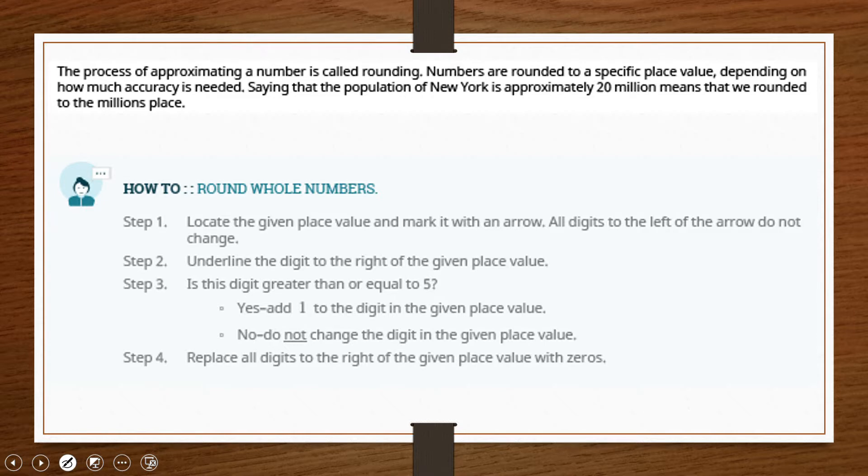Is the digit greater than or equal to 5? Essentially, is it closer to the next place value or is it closer to the place value below it? This is simple and we'll see an example in just a moment. So once we've determined yes or no to that question, then we replace all digits to the right of the given place value with zeros.